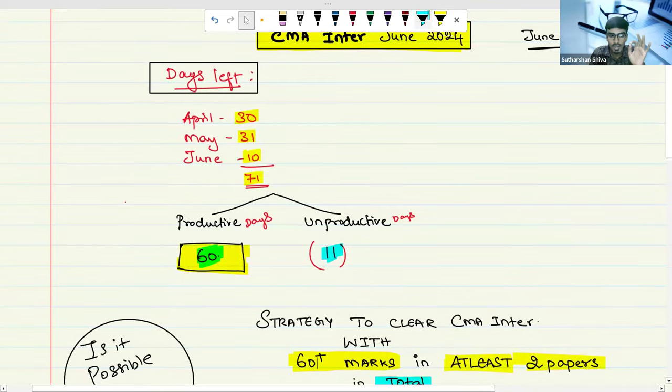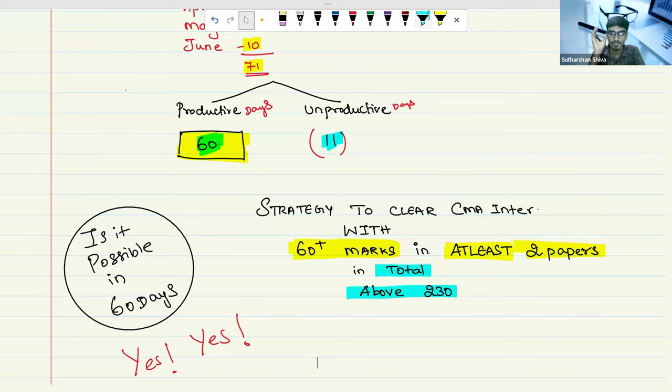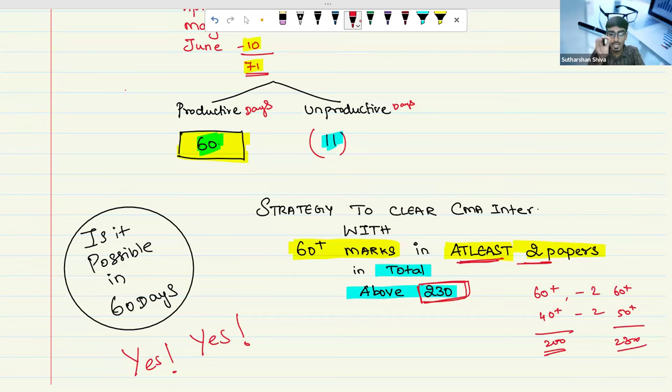Is it possible in 60 days to clear your CMA Inter exam? Yes, it is still possible if you make a proper revision plan. We have a proper strategy to make you clear for the upcoming CMA Inter with 60 plus marks in at least two papers. In total you may score 230 marks.